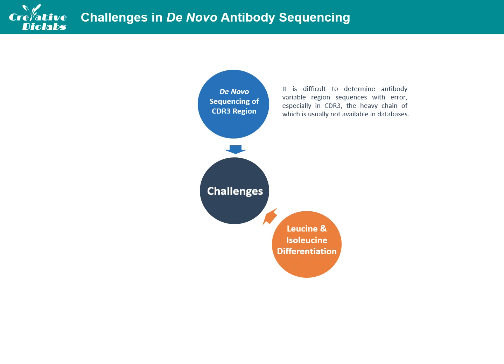The second challenge is the differentiation between leucine and isoleucine. Amino acids leucine and isoleucine are generally considered to be indistinguishable by mass spectrometry, due to their same mass and similar chemical properties. Due to this ambiguity, it is difficult to differentiate between the two residues, and this can impose serious consequences on the overall performance of the antibody's specificity and affinity.